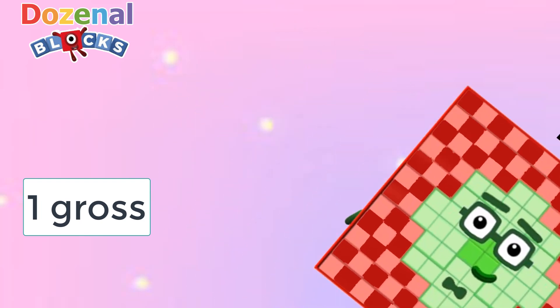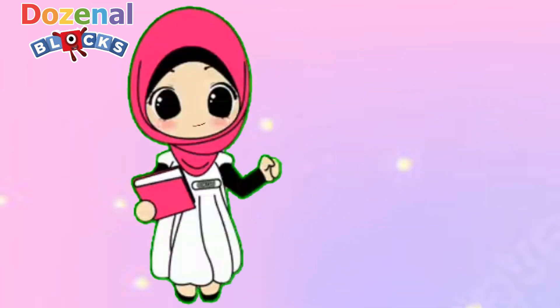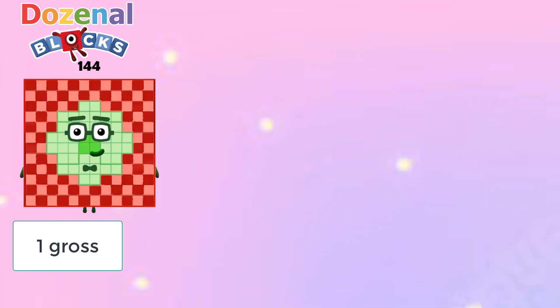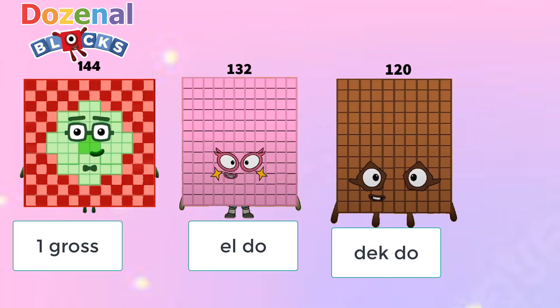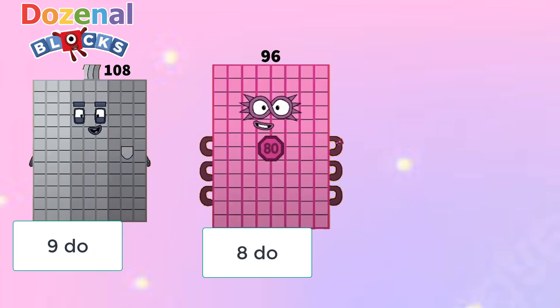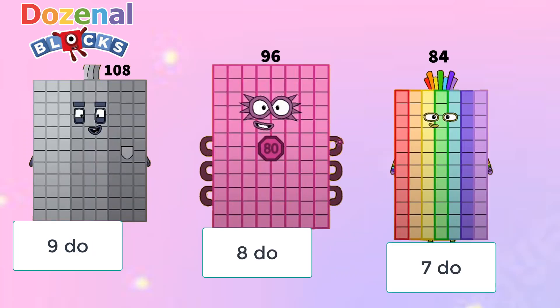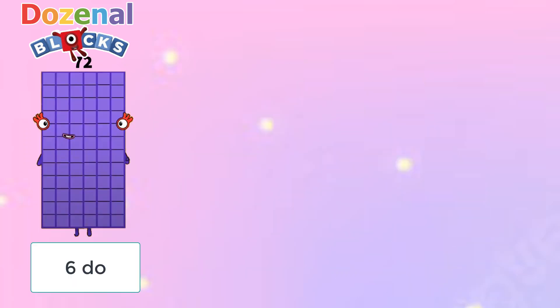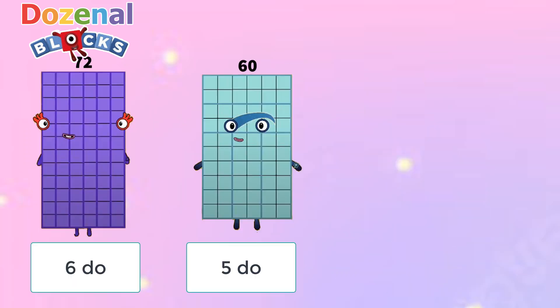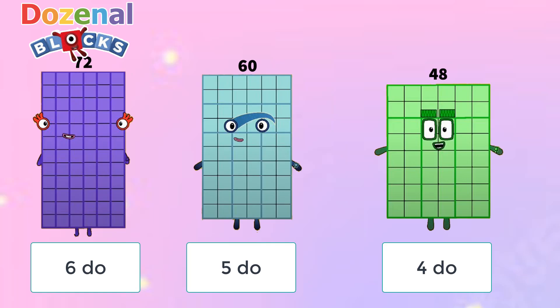1 grow. Let's count backwards: grow, L do, duck do, 9 do, 8 do, 7 do, 6 do.